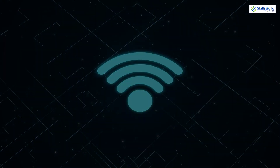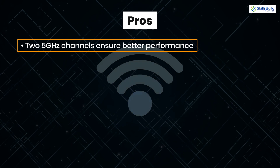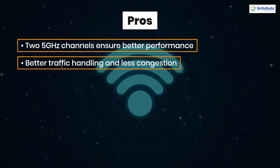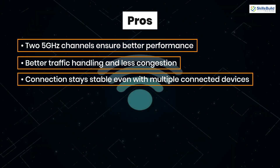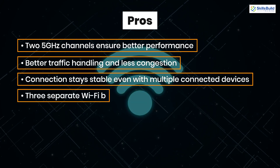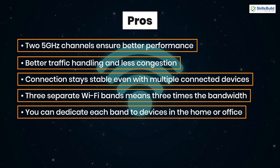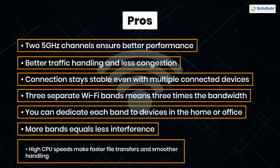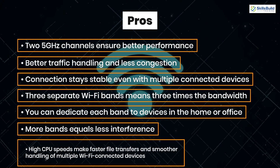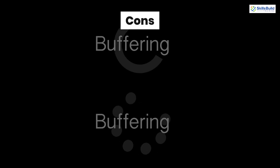Now let's talk about some of the pros of tri-band routers. We get two 5 GHz channels that ensure better performance, better traffic handling, and less congestion. Connections in tri-band routers stay stable even with multiple connected devices. Three separate Wi-Fi bands mean three times the bandwidth, and you can dedicate each band to different devices in your home or office. More bands equals less interference, which means better performance.